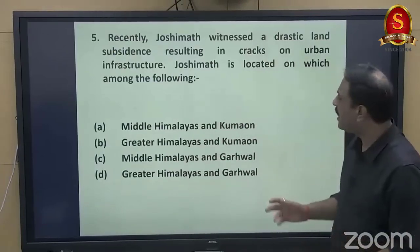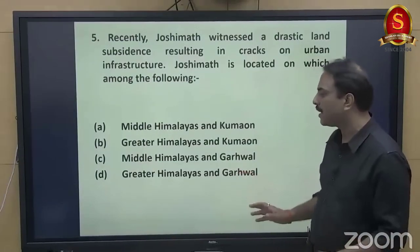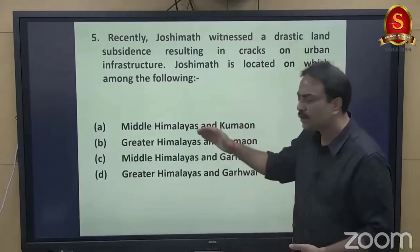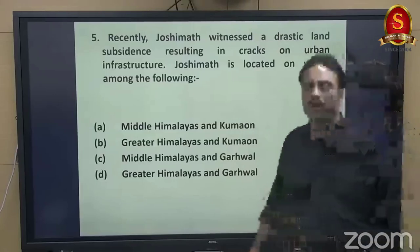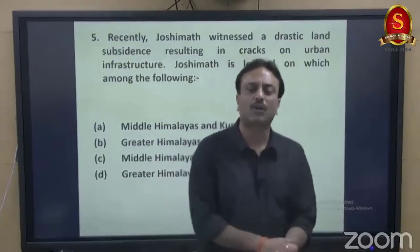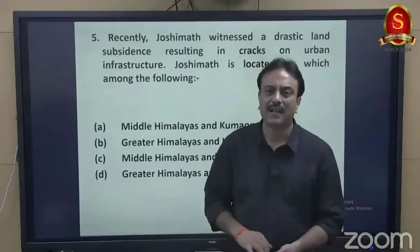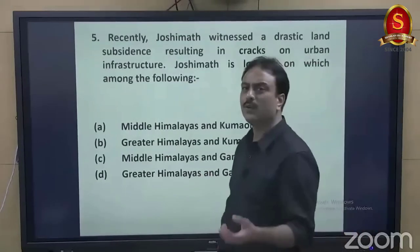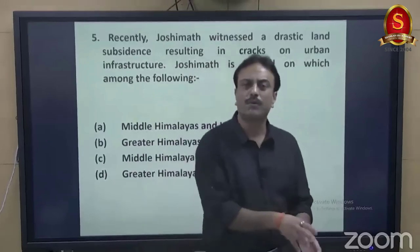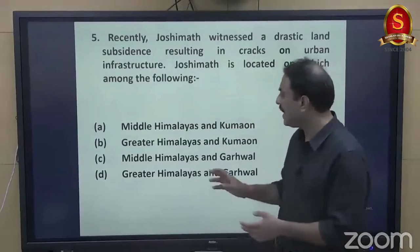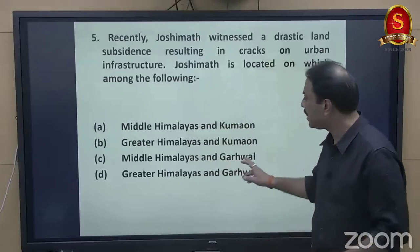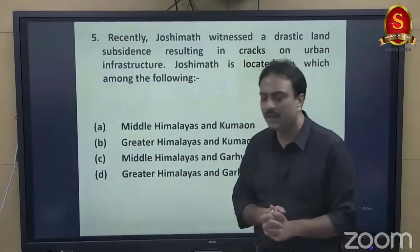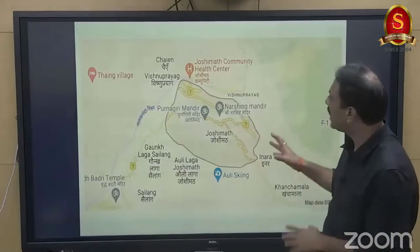Options are: Middle Himalayas in Kumaon, Greater Himalayas in Kumaon, Middle Himalaya in Garhwal, Greater Himalaya in Garhwal. Uttarakhand is divided into eastern Kumaon (Almora, Ranikhet, Nainital, Haldwani, Kaladungi) and western Garhwal (Badrinath, Kedarnath, Gangotri, Yamunotri, Dehradun, Rishikesh, Haridwar, Srinagar of Uttarakhand). Joshimath is very close to Badrinath, so it is part of Garhwal — eliminating options A and B. Joshimath is on the Greater Himalayas, making option D (Greater Himalaya and Garhwal) correct.